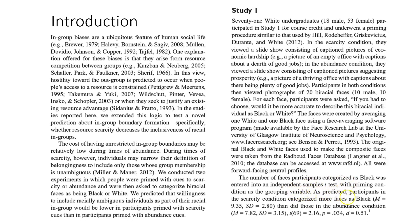As predicted, participants in the scarcity condition categorized more faces as black (mean = 9.35, SD = 2.80) than did those in the abundance condition (mean = 7.82, SD = 3.15), t(69) = 2.16, p = 0.034, d = 0.51.